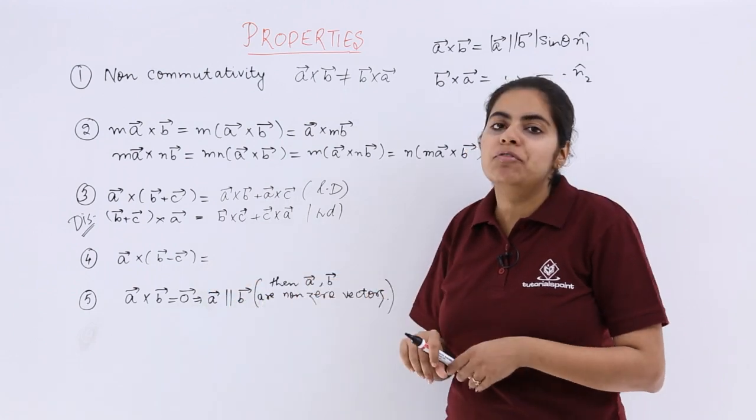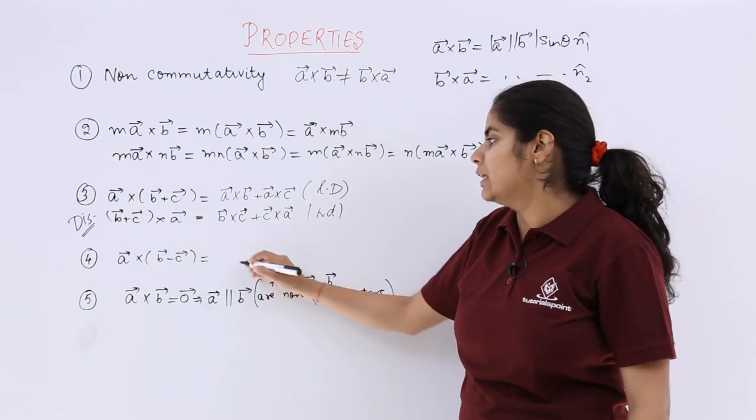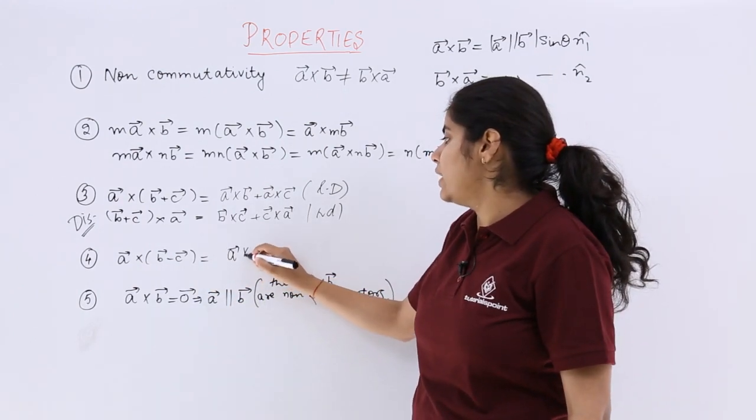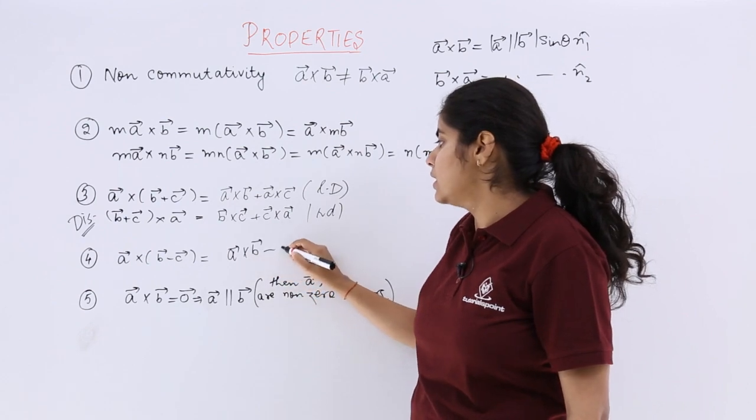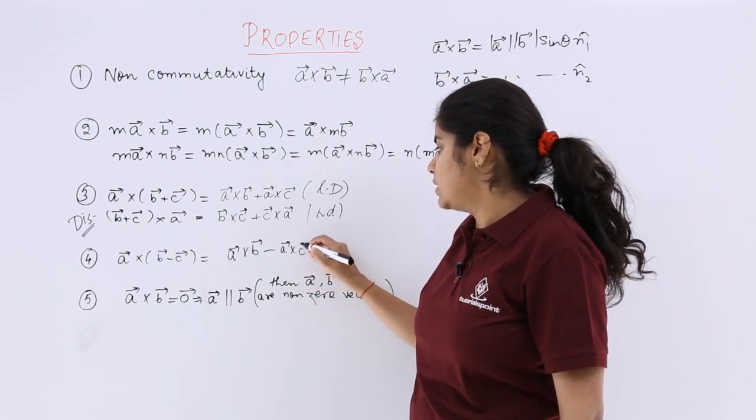Let's move to the next property, wherein we do not have plus but minus. This will also be satisfied, so it becomes a × b minus a × c.